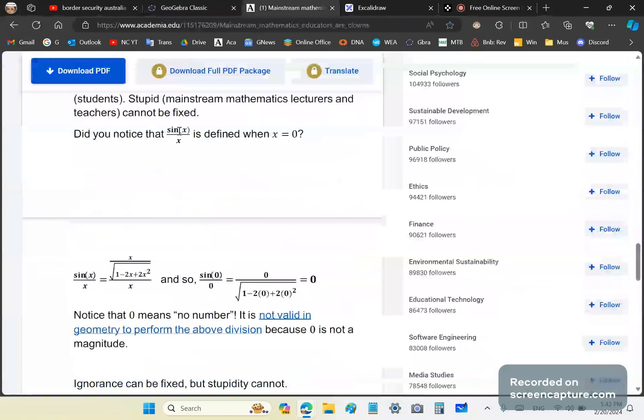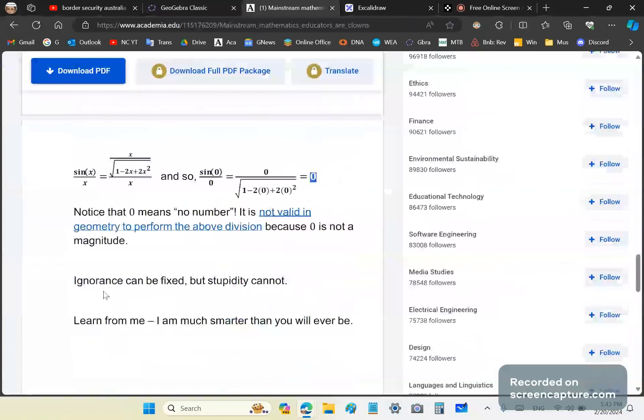So there's also the popular example of sine x over x. It is defined when x is equal to zero because the factor x cancels out. And you can see that very easily with my closed form formula here, which is sine zero over zero, the same as sine zero over zero. And you can see that it equals to zero. So notice that zero means no number. It is not valid in geometry to perform this operation. It's totally invalid. I mean, if you put a zero out there, you're not doing anything. You're just saying there's no number.